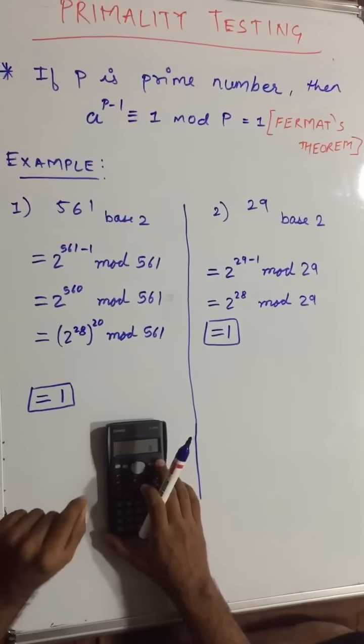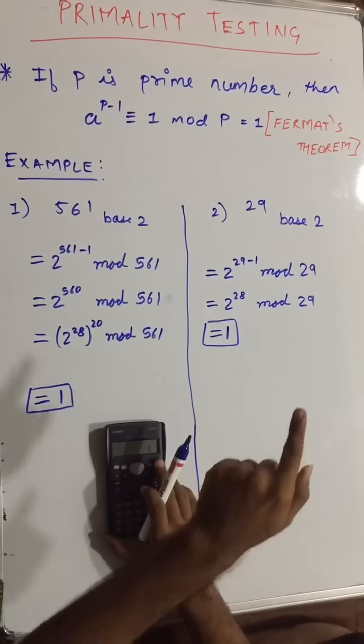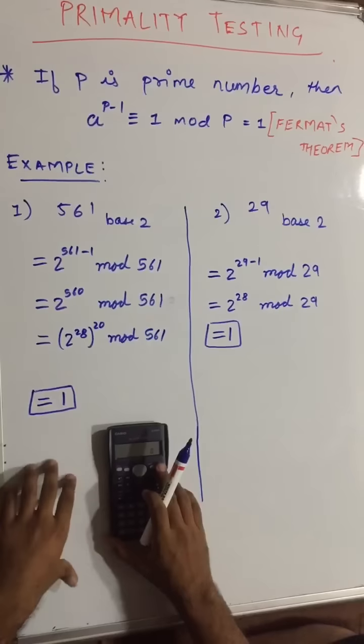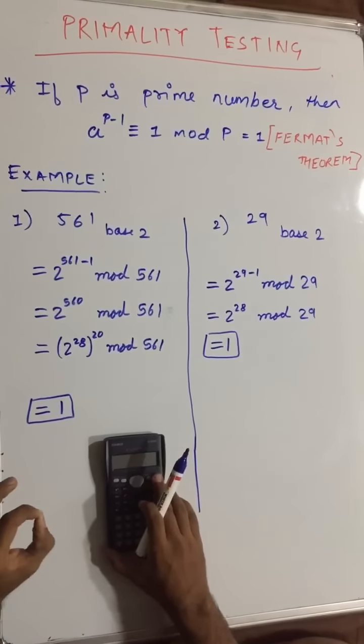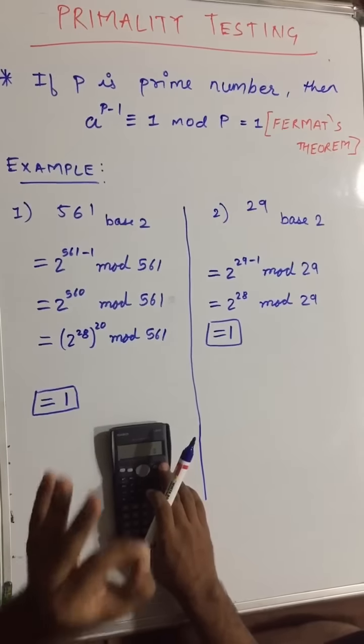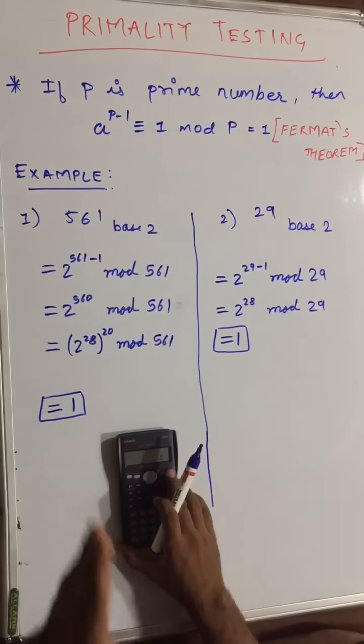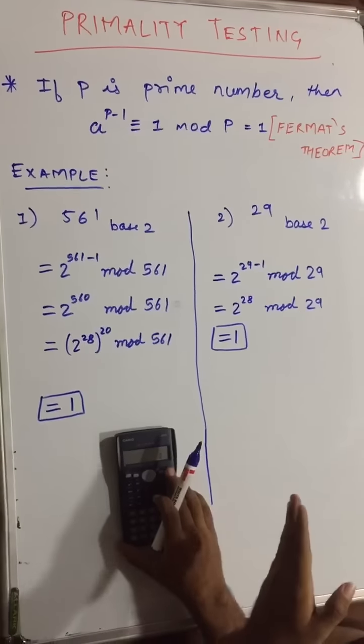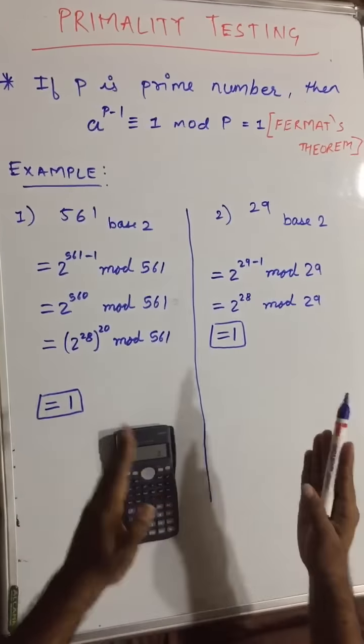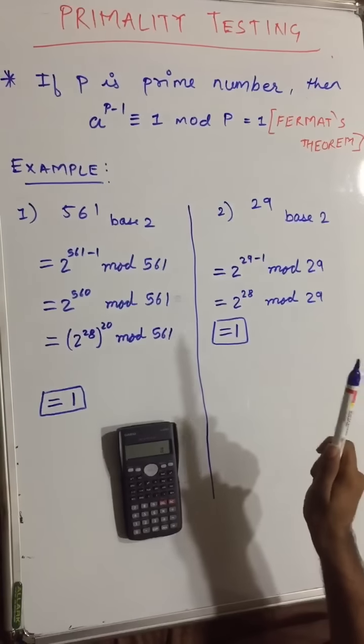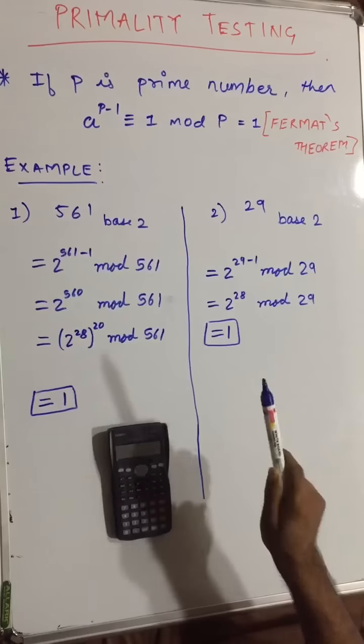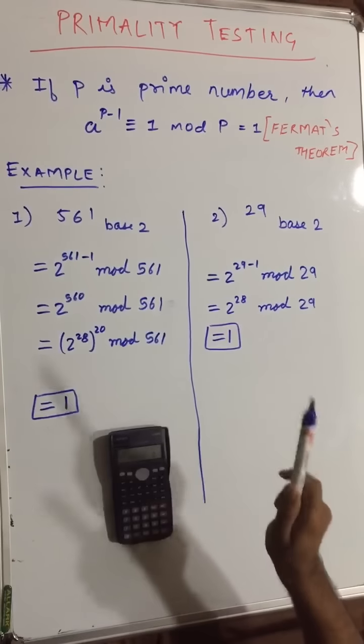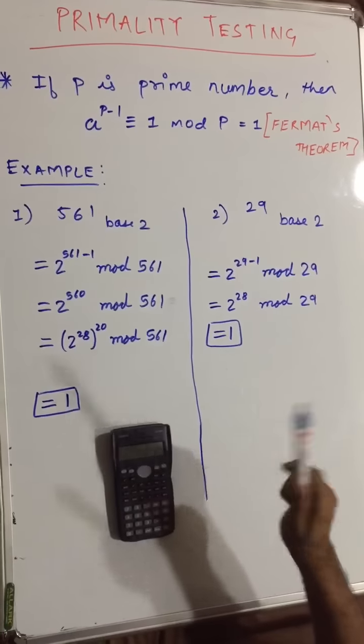So here primality testing failed to prove Fermat's theorem. So to overcome this and to provide a 100% accurate method, we would be learning Miller Rabin test. Miller Rabin test is 100% accurate, which will be differentiating exactly which numbers are composite numbers and which numbers are prime numbers. So that's it for this video. Miller Rabin test we would be seeing in another lecture.